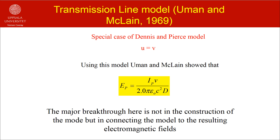The major breakthrough made by Eumann and McLean is not in the construction of the model, but in connecting the model parameters to the resultant electromagnetic fields. They showed that the radiation field peak generated by the model at distance d is related to the peak current through an equation given in the slide. This equation made it possible to remotely sense return stroke current through the radiation fields. In this equation, Ep is the peak of the radiation field, Ip is the peak of the return stroke current, and V is the return stroke speed.